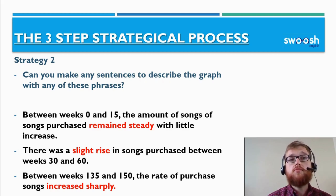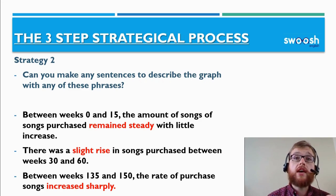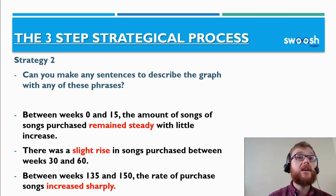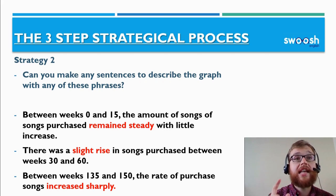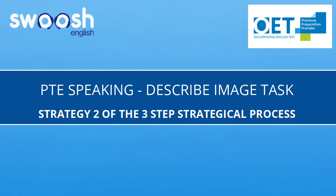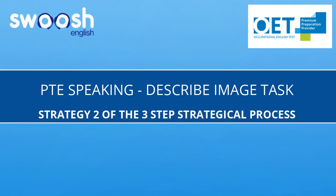If you think about the second example, we have the auxiliary verb 'was.' When using the auxiliary verb 'was,' we don't have to use the past form of the main verb — that's why 'slight' remains 'slight' and doesn't become 'slightly rose,' for example.